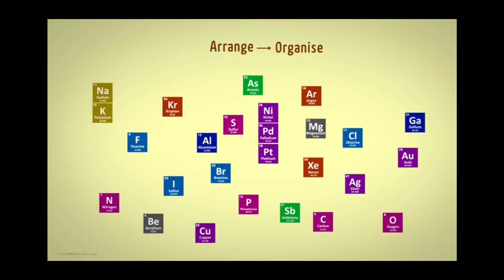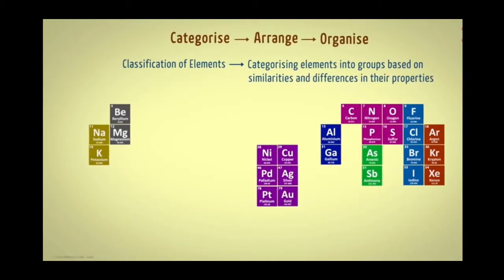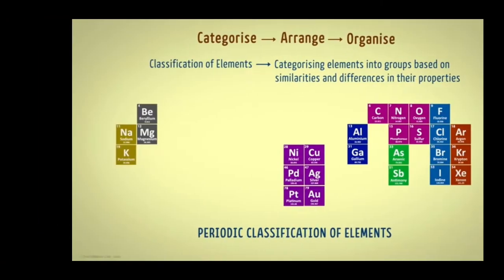And what is organizing? It means arranging the elements. Arranging is possible only when we categorize the elements. Only when we categorize or classify, it will be easy for us to learn about elements. So, classification of elements means categorizing elements into groups based on the similarities and differences in their properties.